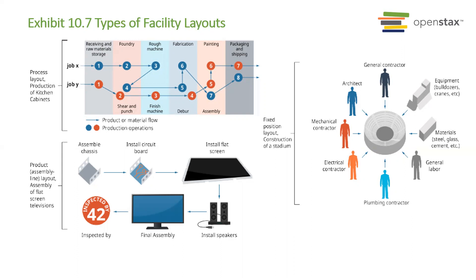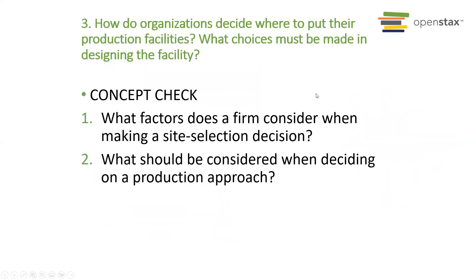Think about restaurants — they're laid out in a certain way to capture customers and make it easy and accessible for them. Location of your facility is also important in terms of offering a service. If you own a beautiful business but there's a lack of parking, then people might have a lot of foot traffic — that's just something to consider. Section three asks: how do organizations decide where to put their production facilities, and what choices must be made in designing the facility? These are some concept check questions while reviewing this section of chapter 10.